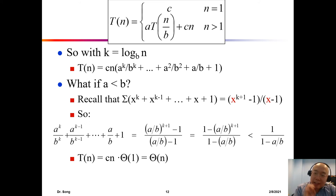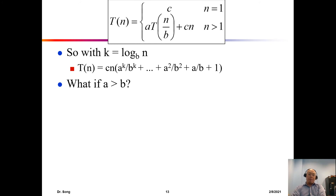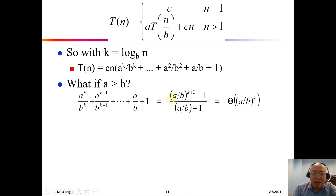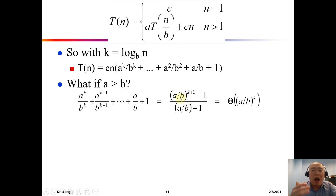The third case: when a is greater than b. When a > b, a/b is greater than 1, and with the power of k, when k is large enough, (a/b)^k becomes the dominant term.